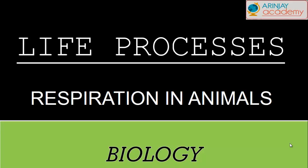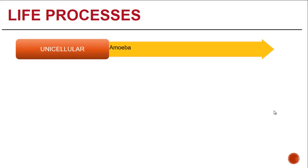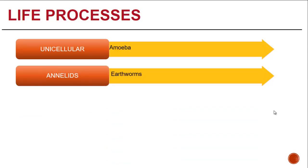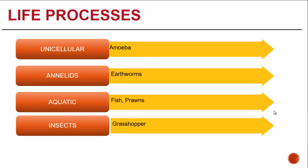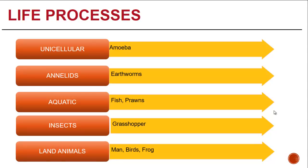Let's move on to how respiration takes place in animals. We have a look at unicellular organisms like the amoeba, annelids like earthworms, aquatic animals like fish or prawns, insects like the grasshopper, ant, mosquito, and of course land animals like man, birds, frog, etc. All these need to respire.